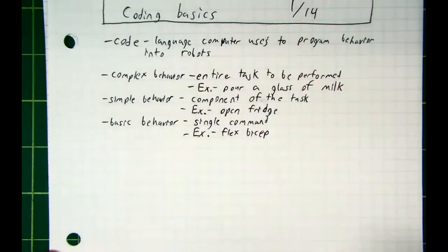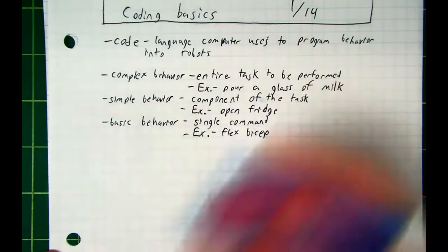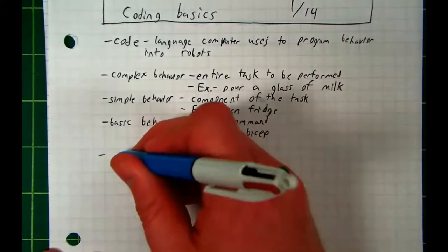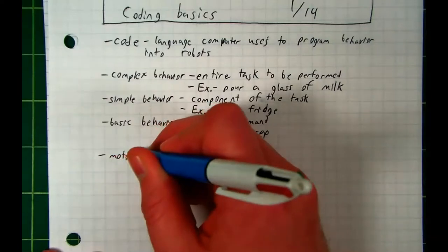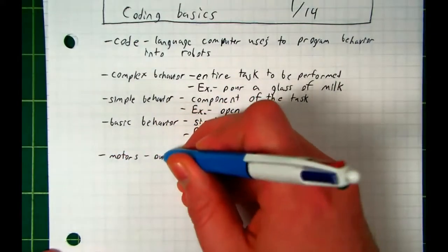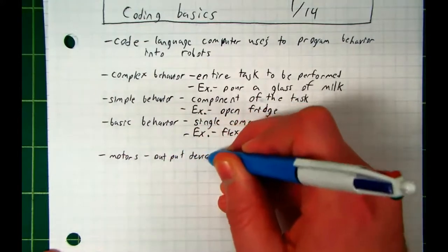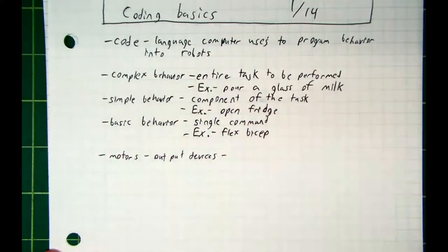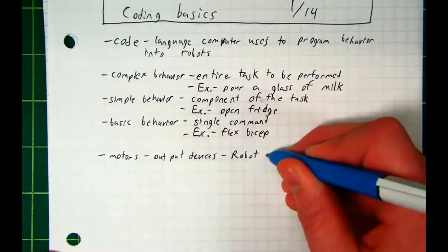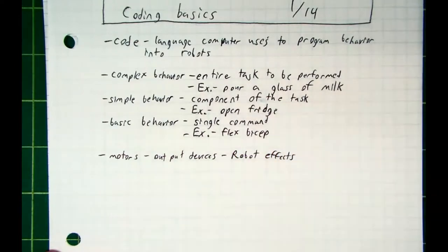So when we're working with robots, when we're working with code, there are inputs and outputs. Our inputs are our sensors, and our outputs are our motors. Let's go ahead and write that down. Let's start with motors. Our motors are our output devices. They're the parts of our robot that affect the environment.